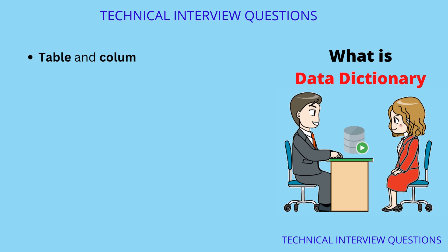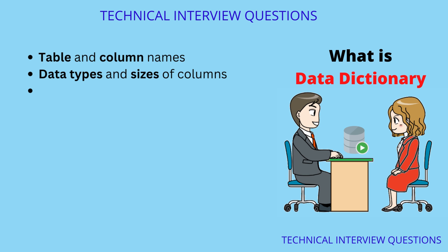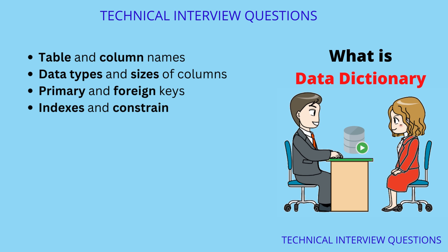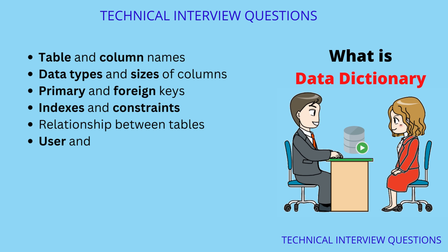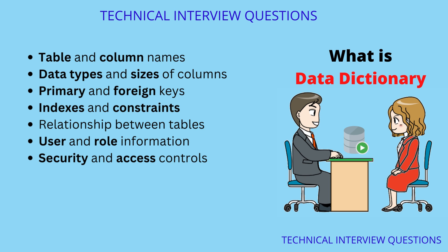Some examples of information that might be stored in a data dictionary include table and column names, data types and sizes of columns, primary and foreign keys, indexes and constraints, and relationships between tables.